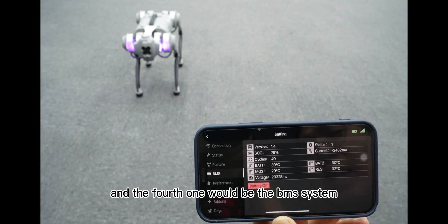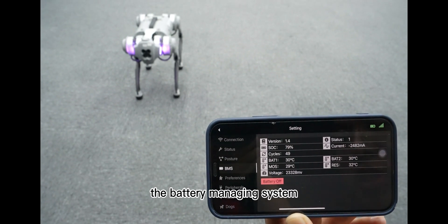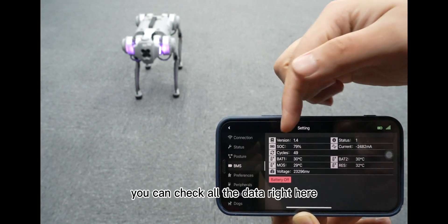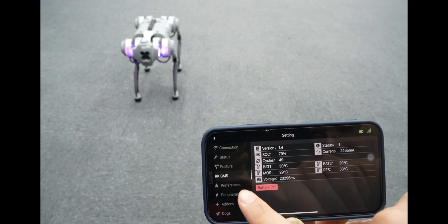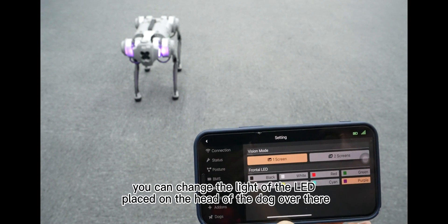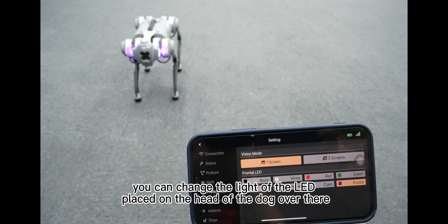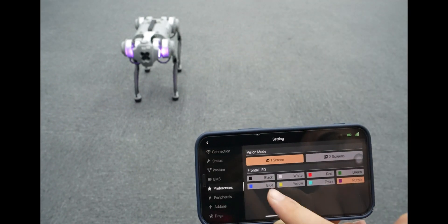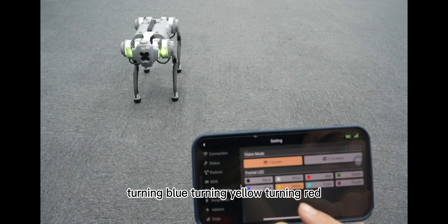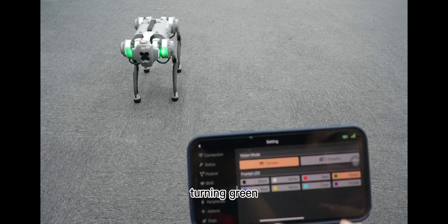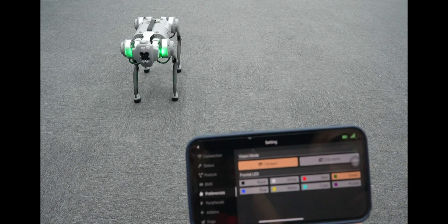And the fourth one would be the BMS system, the battery managing system. You can check all the data right here. You can change the light of the LED placed on the head of the dog over there, turning blue, turning yellow, turning red, turning green, and so on.